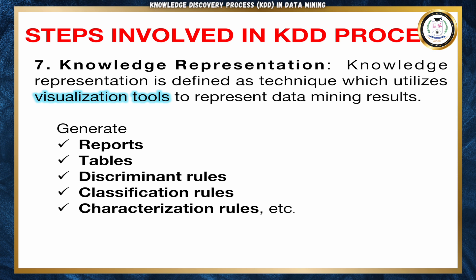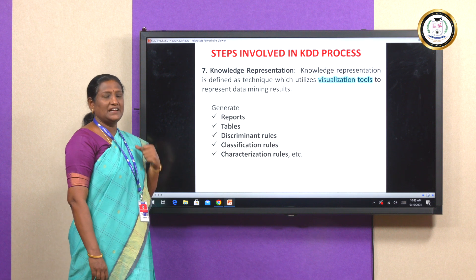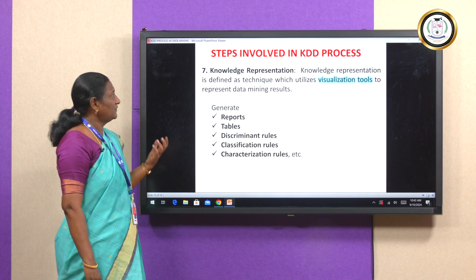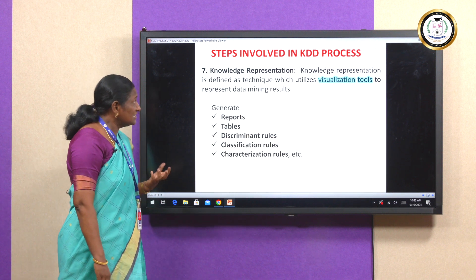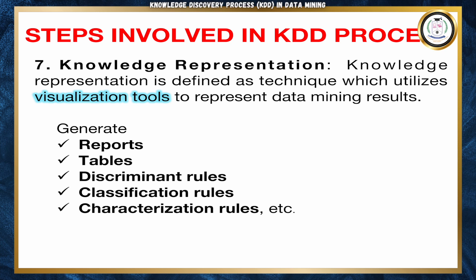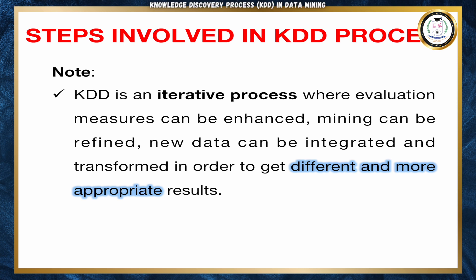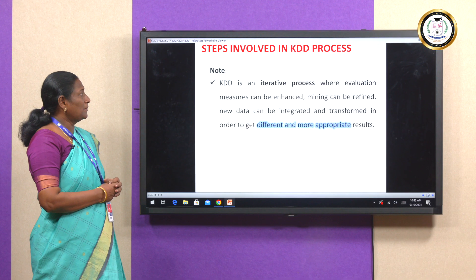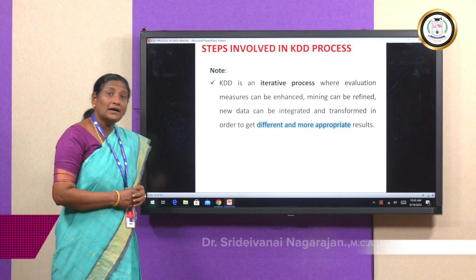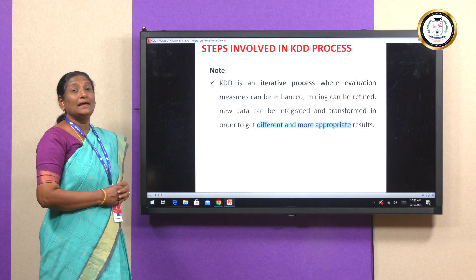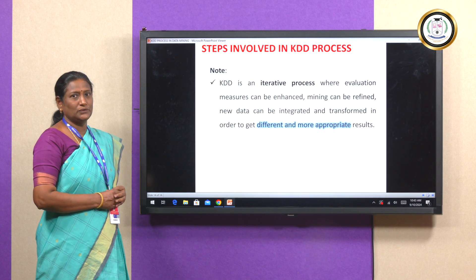The last step of the KDD process is knowledge representation. Once patterns are produced by the data mining techniques and evaluated, they are presented to the user using visualization tools. Patterns can be presented in the form of reports, tables, discriminant rules, classification rules, characterization rules, etc. Finally, the KDD process is an iterative process in which evaluation measures can be enhanced, mining methods can be refined, or new data can be integrated so that more unexpected, unusual, hidden, and interesting patterns can be discovered from the database for the benefit of the user.